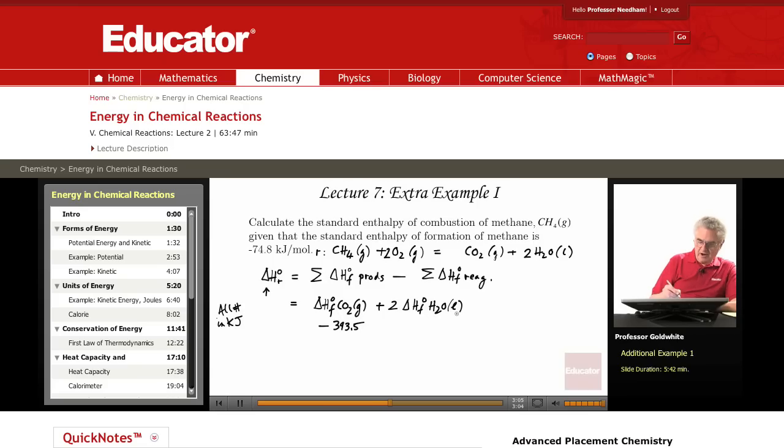The standard enthalpy of formation of water is negative 285.8 kilojoules per mole. And we have two moles of water. Therefore, we need to multiply this by two.